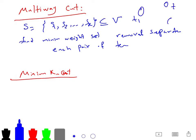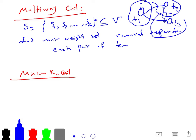For example, with terminal 1, terminal 2, terminal 3, you can make a cluster, but your terminals are fixed. On the other hand, the minimum K-cut problem is much more general.